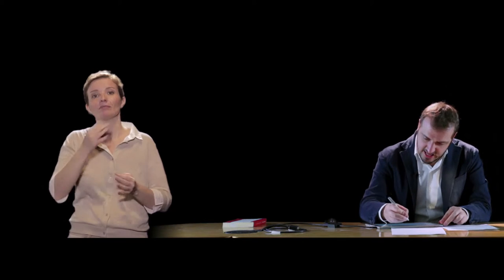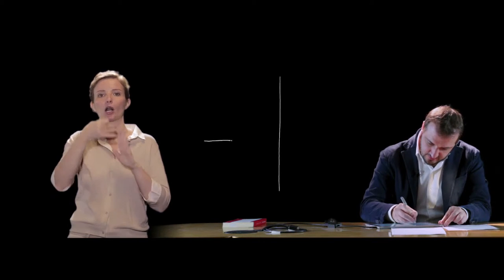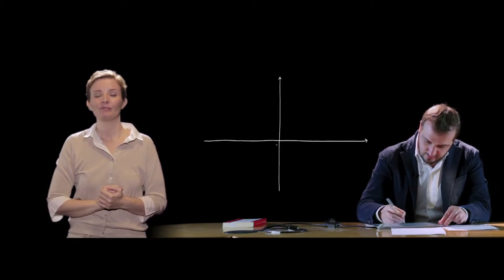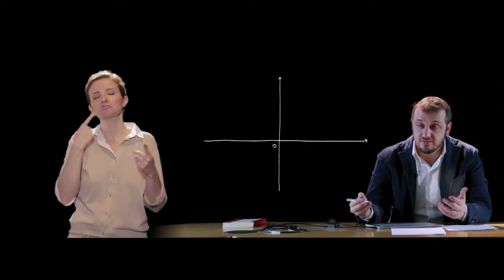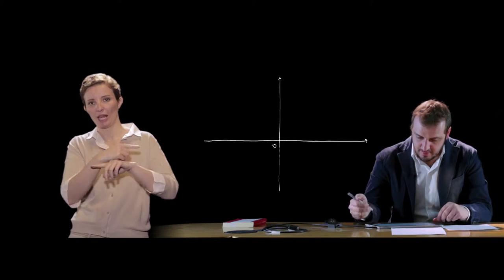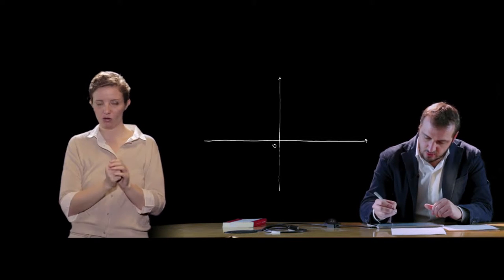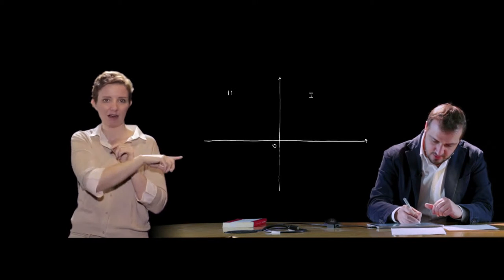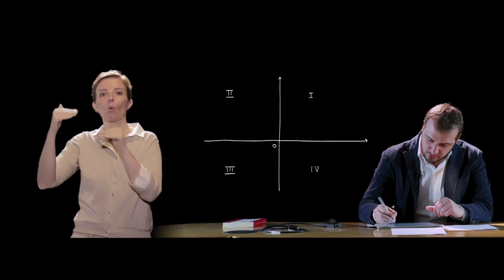Riprendendo il sistema di assi cartesiani, l'asse delle ordinate e l'asse delle ascisse, è possibile definire quattro angoli retti che identificano il sistema in cui è suddiviso il piano cartesiano dagli assi. In particolare questi quattro angoli retti vengono chiamati quadranti, nell'ordine primo, secondo, terzo e quarto quadrante.